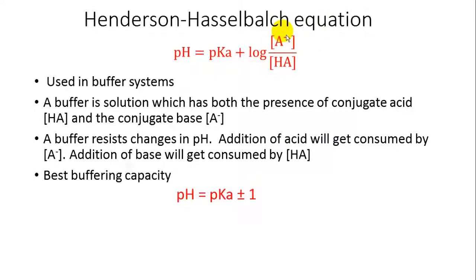The best buffering capacity is where pH is equal to pKa plus or minus 1. Remember, this pKa is the acid dissociation constant for one proton. So one proton is going to have a Ka. From there, we calculate the pKa.